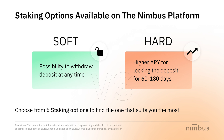Within each staking type, you have several options to choose from and can stake either NBU or GNBU. However, in both cases, rewards are received in NBU according to the selected APY. If you don't have NBU tokens but have other assets in your wallet — such as ETH or BNB — you can simply acquire NBU and GNBU tokens right at the Nimbus platform.